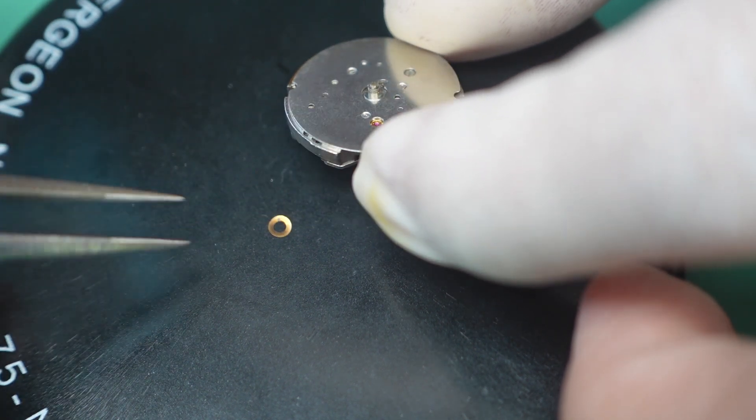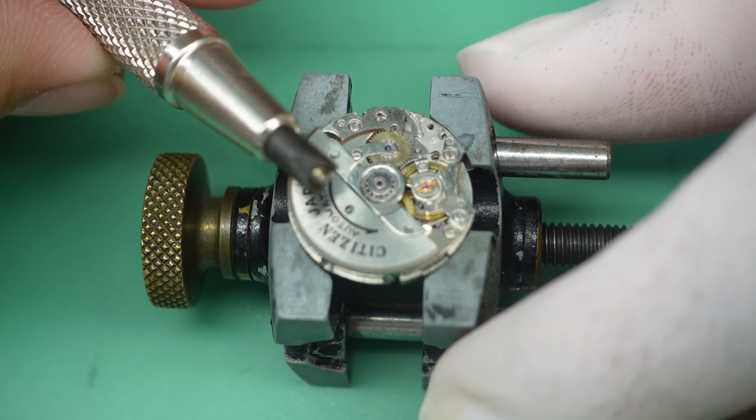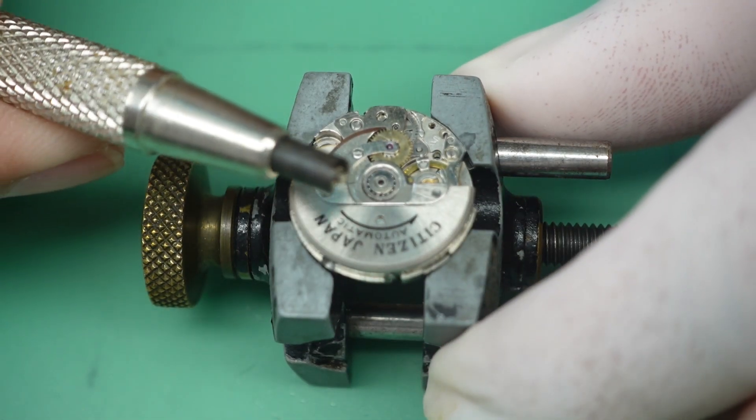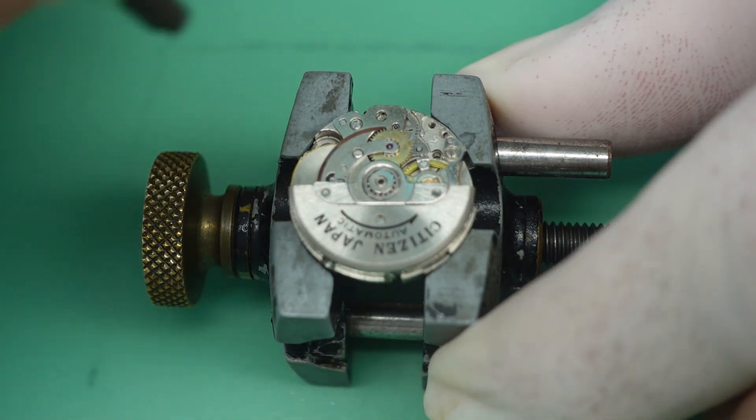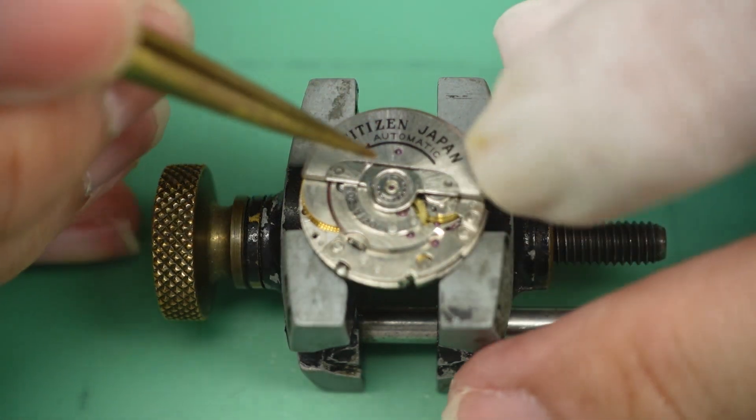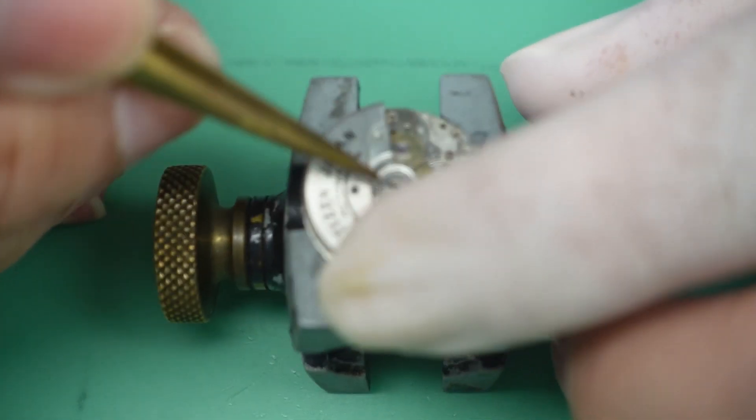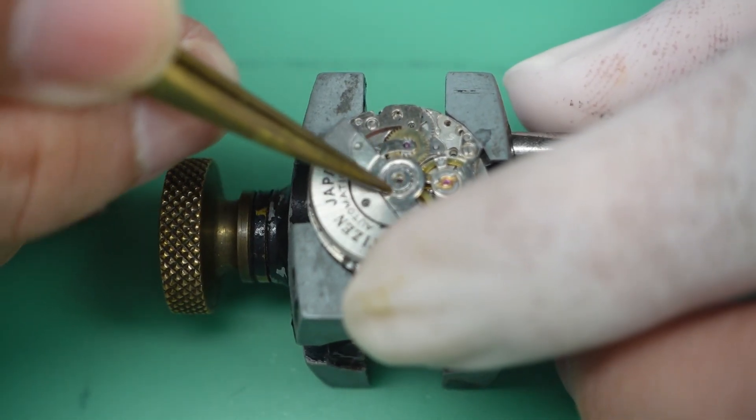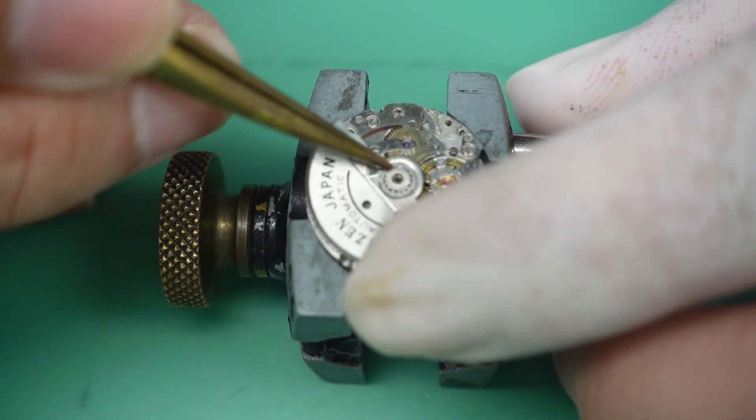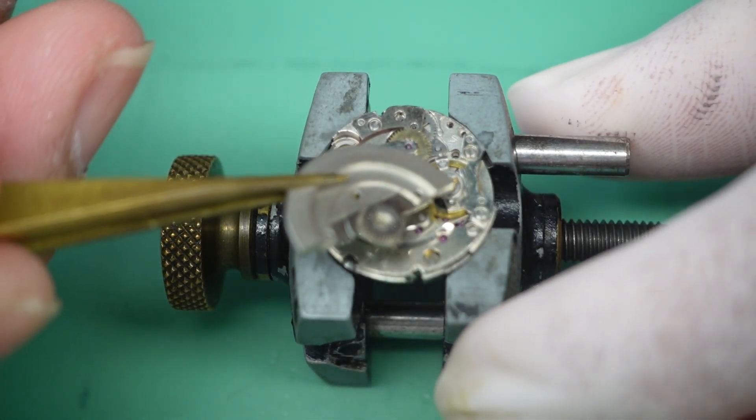The washer, this is a special tool to remove the rotor. The movement is so small, too small. Finally the rotor can be removed. Very tricky, so small.